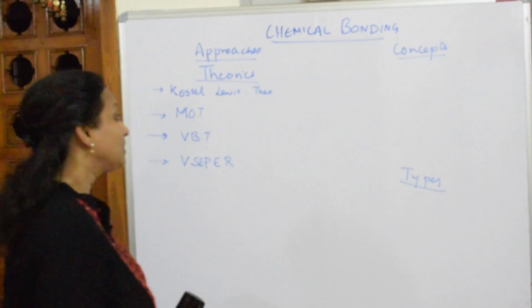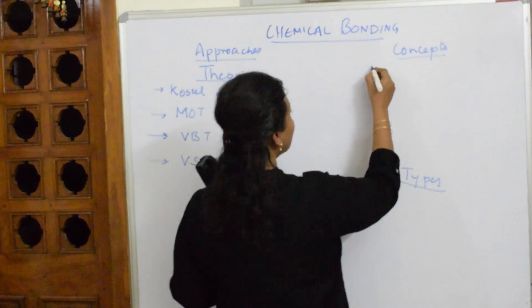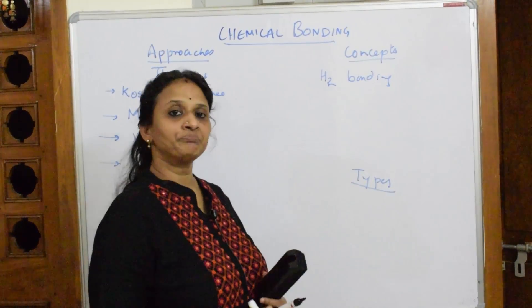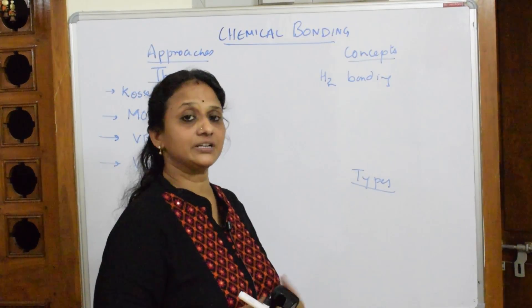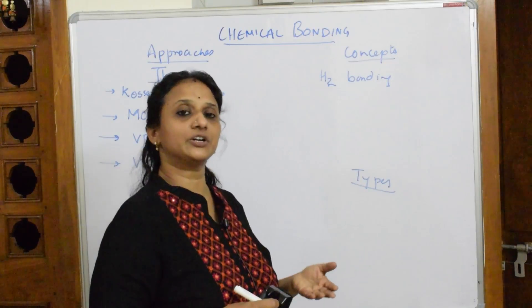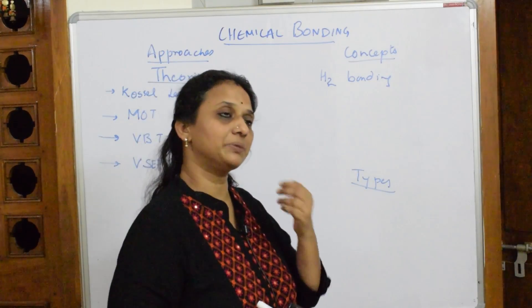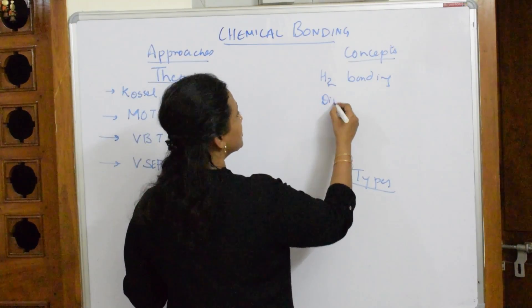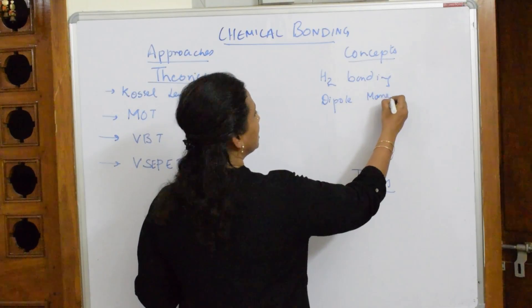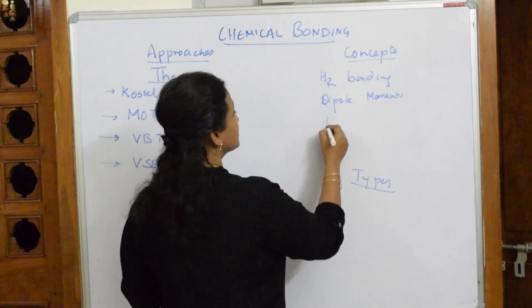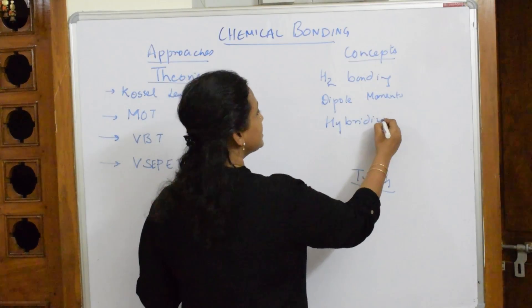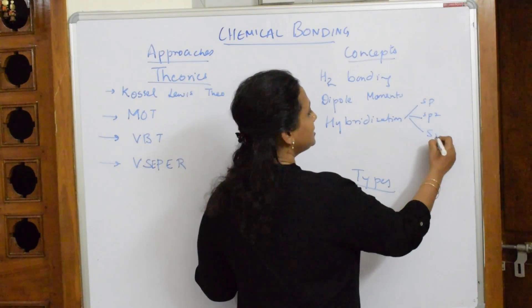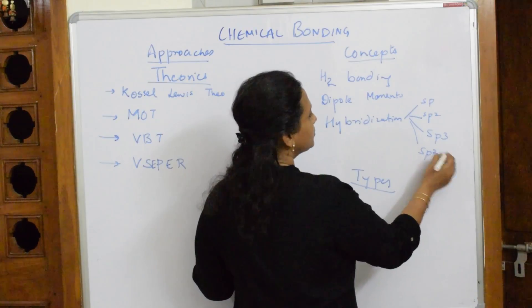VBT is linked to these theories. Coming to the concepts of Chemical Bonding: you have hydrogen bonding — you'll study the types, the factors, how hydrogen bonds form, and whether solubility increases or decreases because of hydrogen bonding. You'll also learn about dipole moment and hybridization — including SP, SP2, SP3, SP3D, and SP2D2 hybrid orbitals.